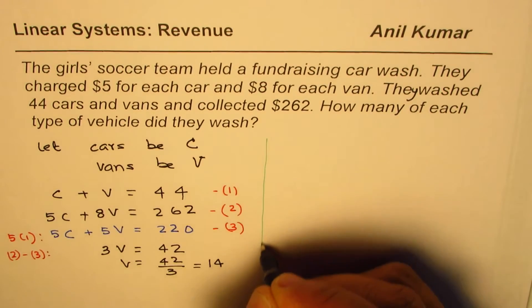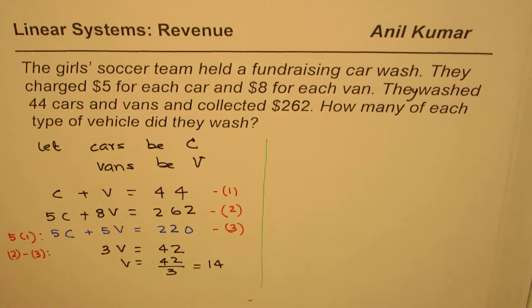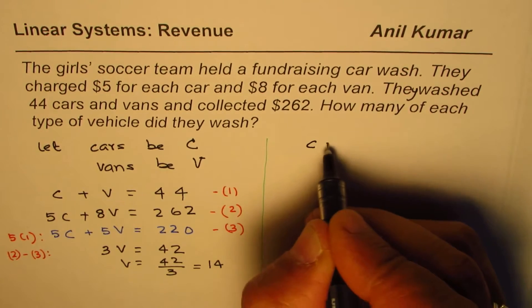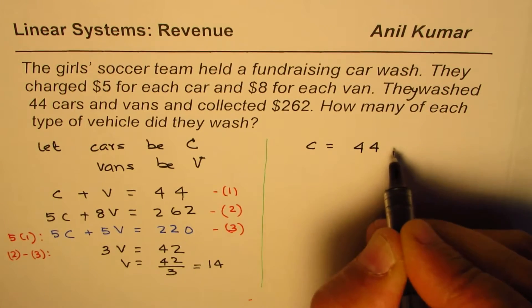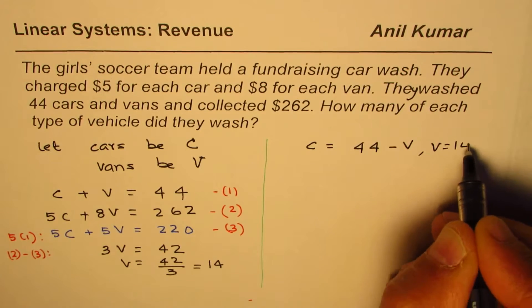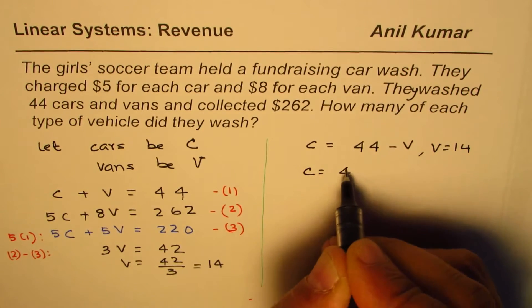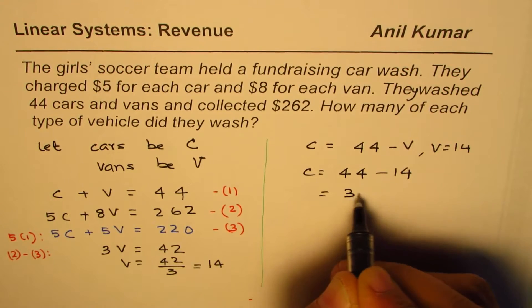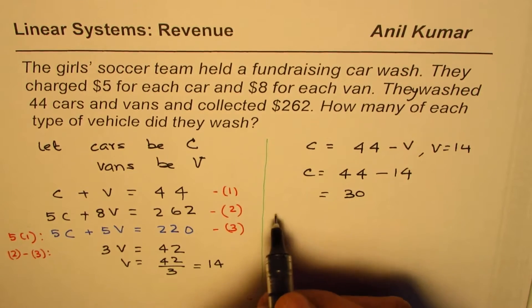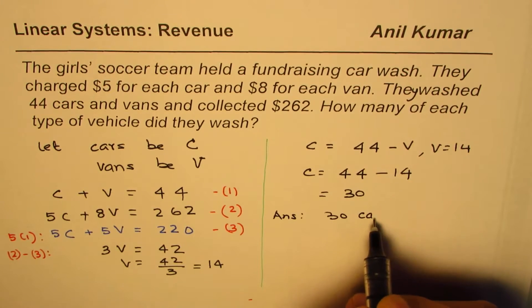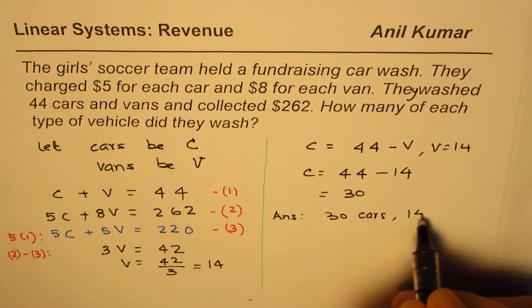Once you know the number of vans, you can find the number of cars using the first equation. C equals 44 minus V, which is 44 minus 14, equals 30. So the answer is 30 cars and 14 vans.